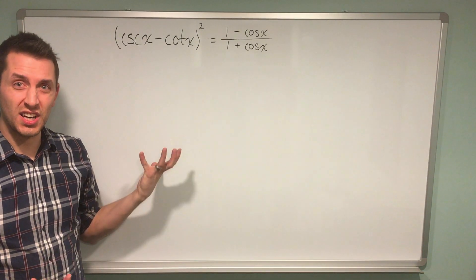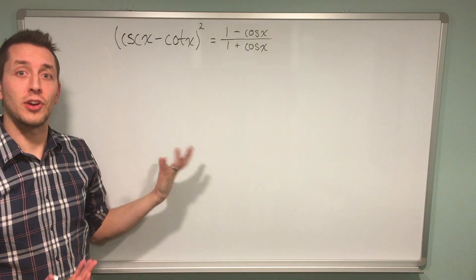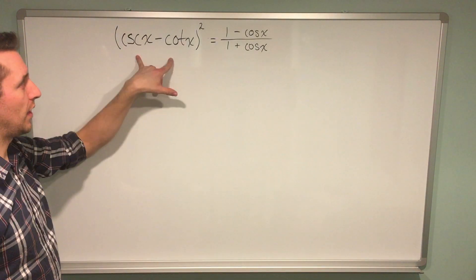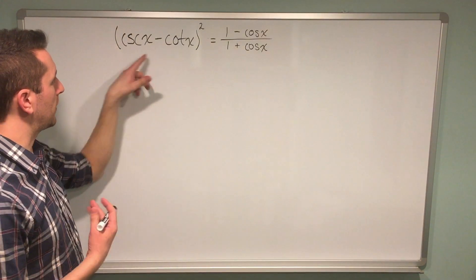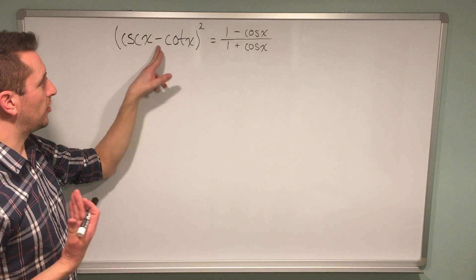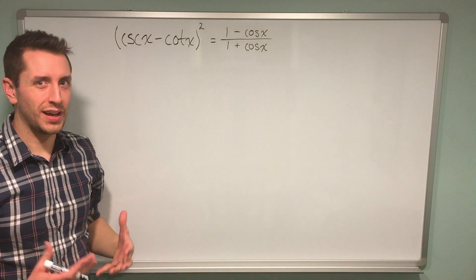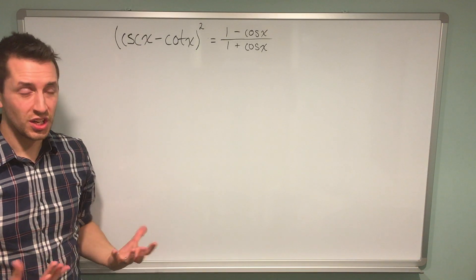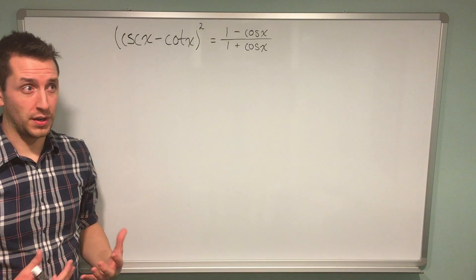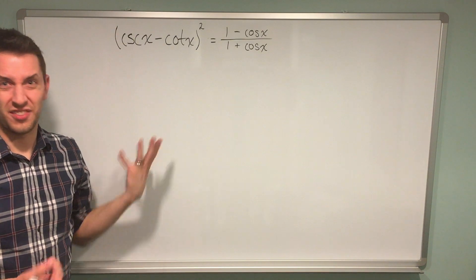With trig identity problems, I usually recommend picking the most complex side and starting with that one. In this case, the left side is more complex. I don't like that I have reciprocal expressions here, and I also have subtraction. Usually with trig identities, when you have subtraction or addition, you end up with a more complex problem. Kind of counterintuitive, but that's just the way these things work.